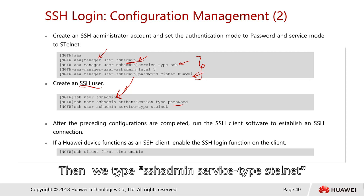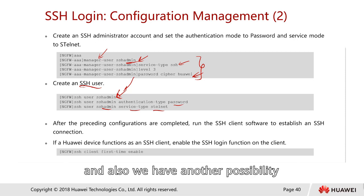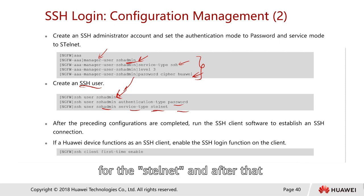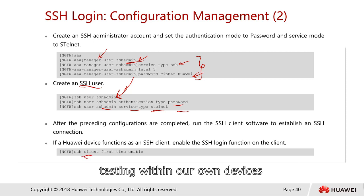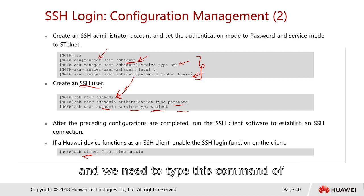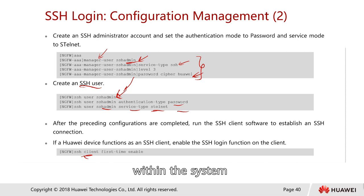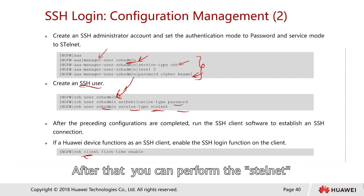Continue with 'ssh-admin service-type stelnet' — this is the minimum requirement for SSH access. There is also an SCP option for file transfer. To test SSH within the device itself, type 'ssh client first-time enable', and then perform 'stelnet' to test the connection.